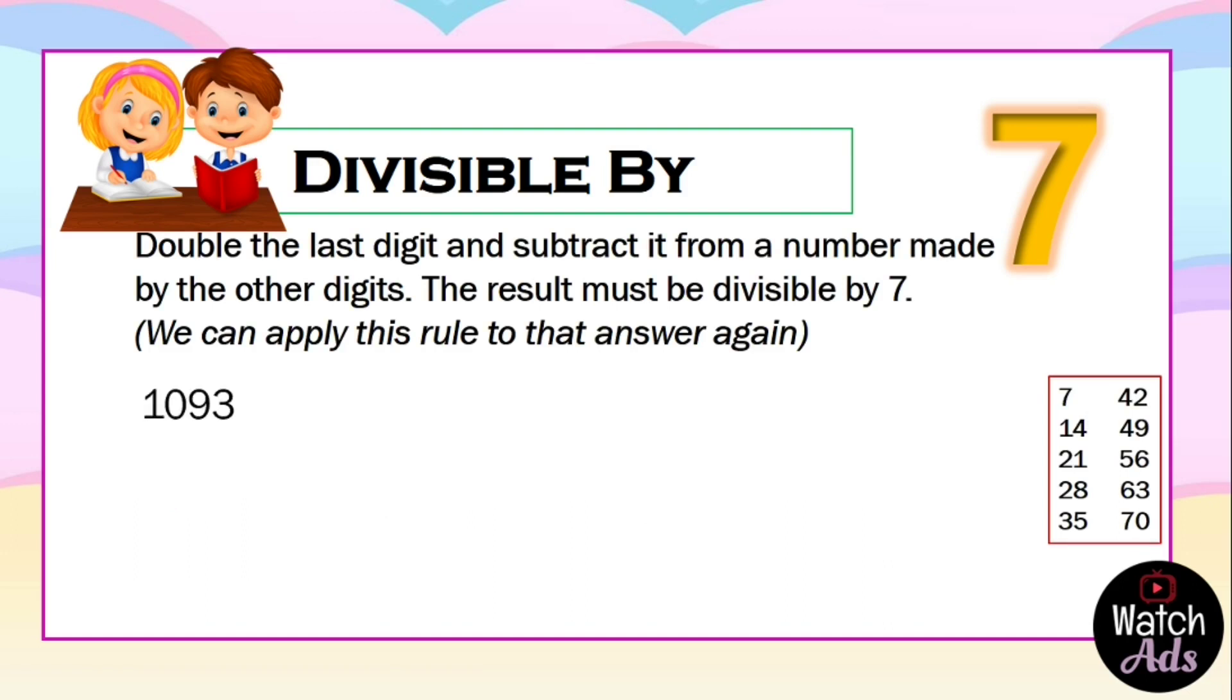1093. We double the last digit that is 3. It gives us 6. We subtract 6 from 109. The answer is 103.